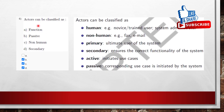Question 6: The option 'function' is not in the list of actor types. From the material it is clear that actors can be classified as human, non-human, primary, secondary, active, and passive. Since 'function' is not in the list, it cannot be a type of actor.